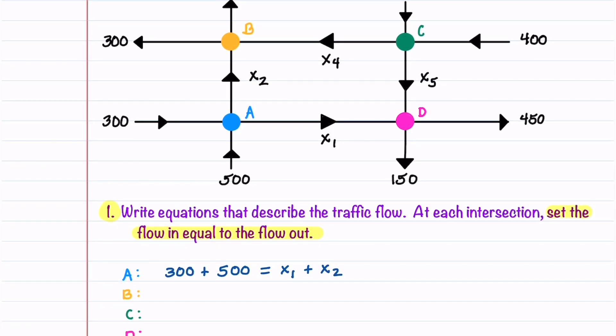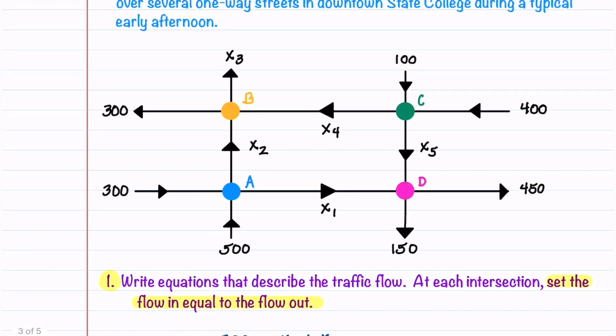At intersection B, we have x2 plus x4 traveling into the intersection, and then we have 300 and x3 traveling out of the intersection.